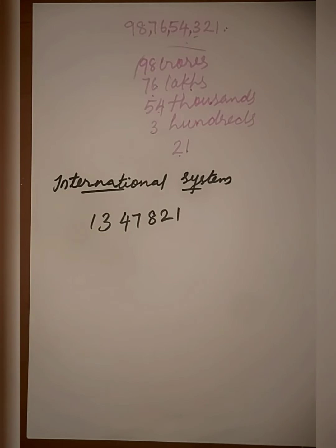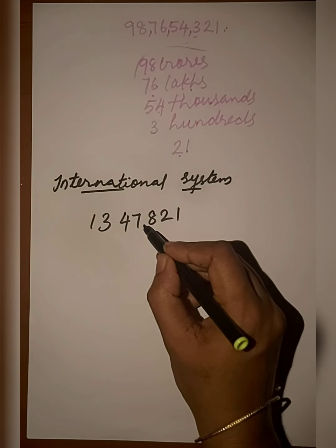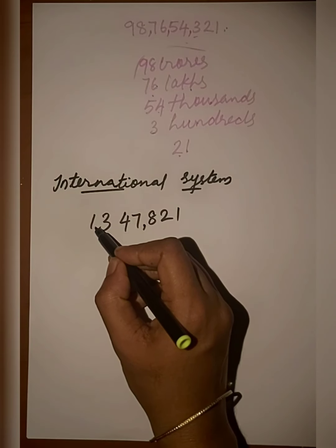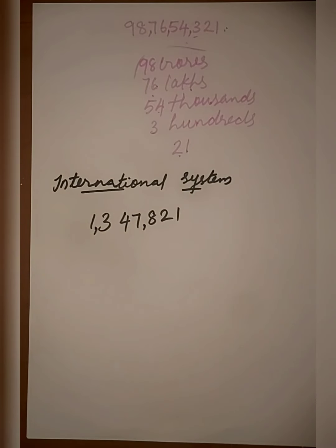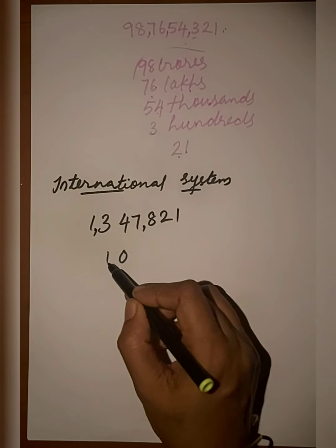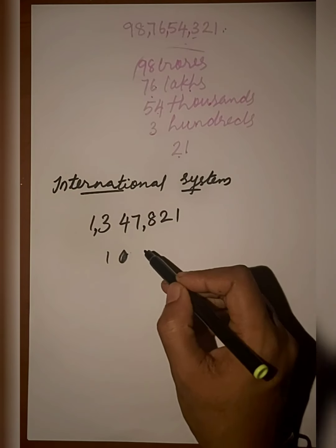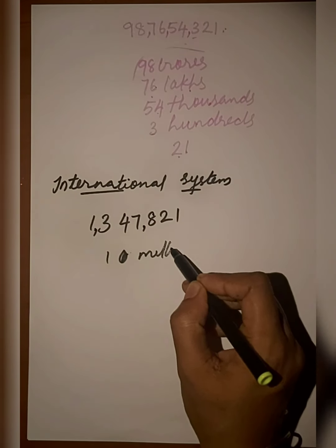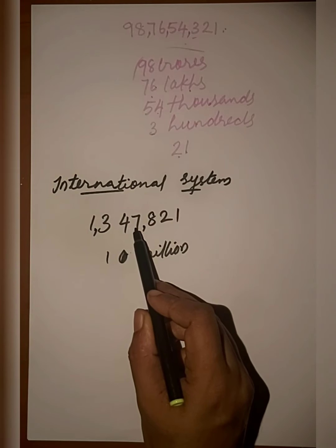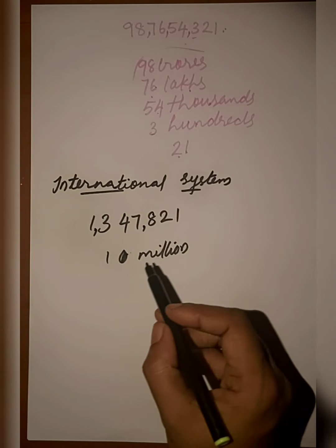For example, let's read and write a number in the International system. We place the commas — the first comma after three digits, the second comma after three more digits. The number name of this number is: one million three hundred forty-seven thousand...